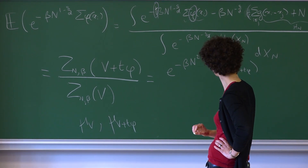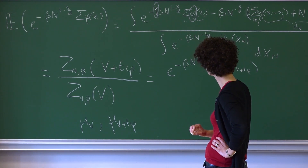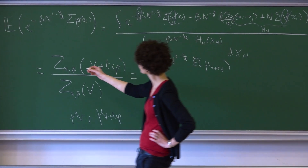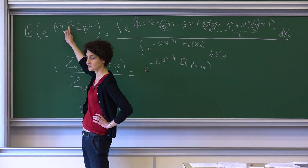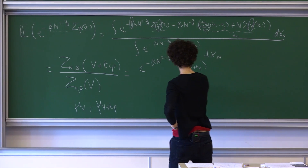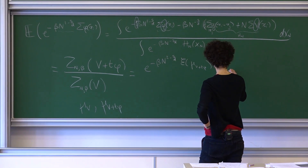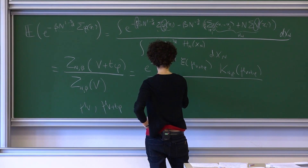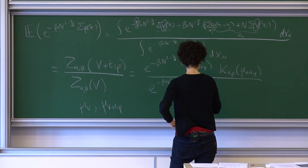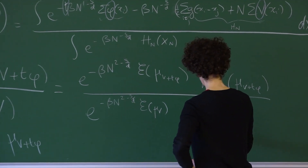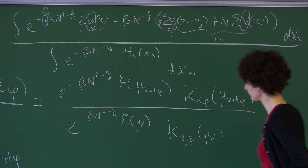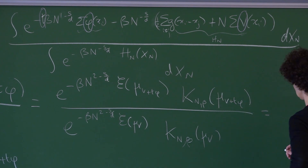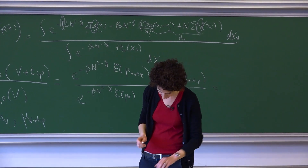[Question: When s is different from zero, you really have a different scaling between phi and V?] I tried to put the same. That's why I carry... there's a normalization that comes out naturally from the value of s and d. So there is this, and then there's what I called K_N_beta of mu_{V+t*phi}. We had already split by extracting the leading order of the partition function.